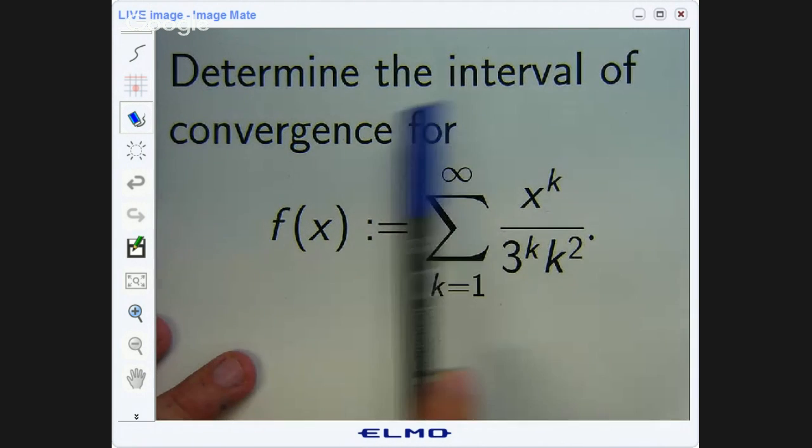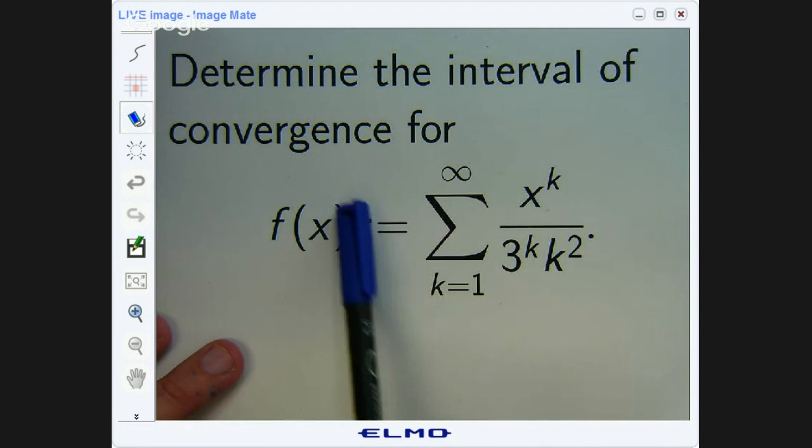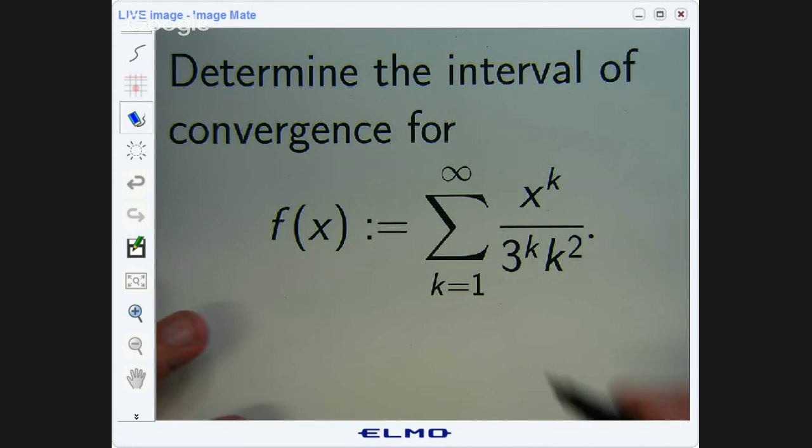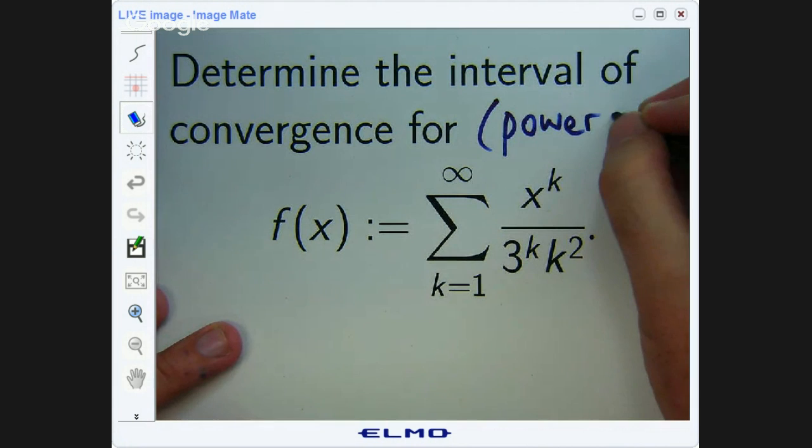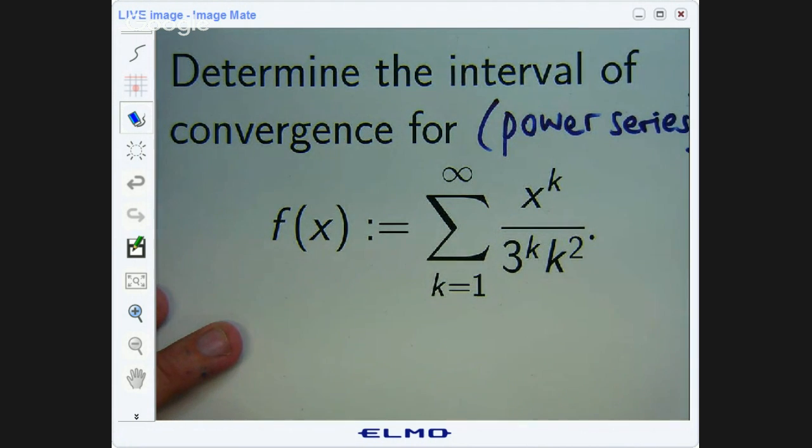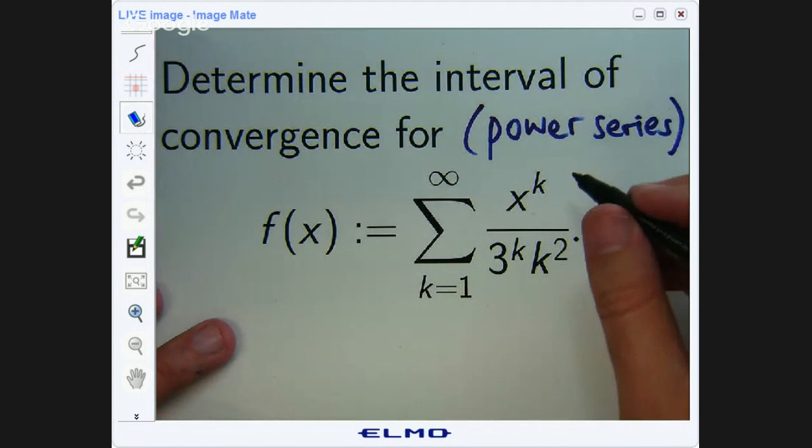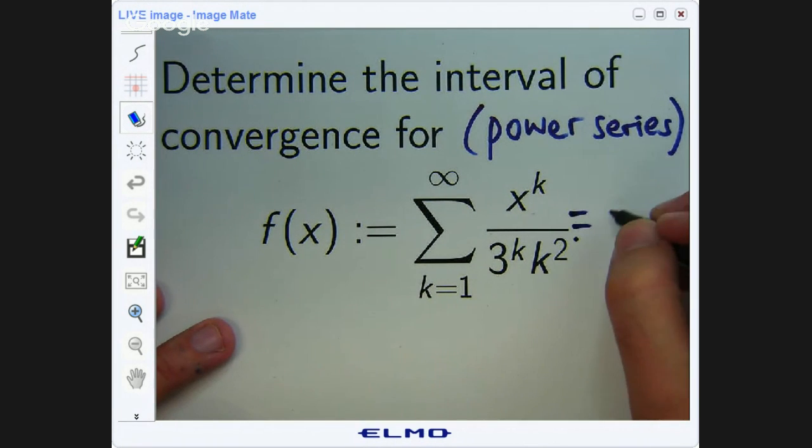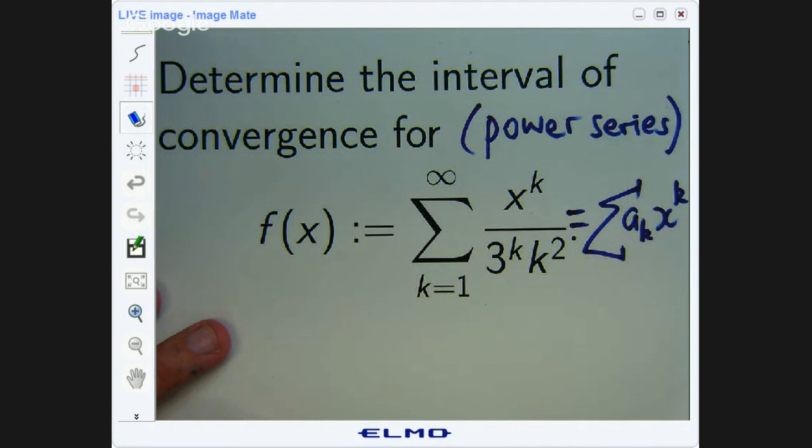We're asked to determine the interval of convergence for this power series. I'll put the function here just defining the function for a particular reason. First of all, this is a special kind of series called a power series. It involves powers of x. In particular, you can write this as something like a_k x to the k. So a sub k here would be 1 over 3 to the k times k squared.